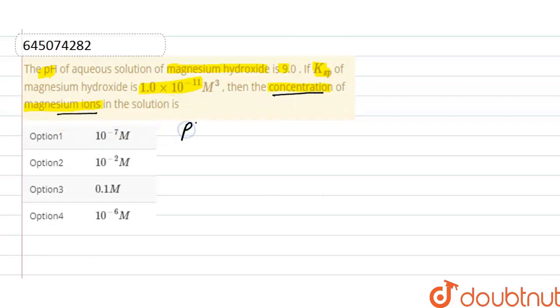First of all, here pH of the magnesium hydroxide solution is given, that is 9. And as we know, pH plus pOH it is equals to 14. So here pOH it is equals to 14 minus 9. So pOH here is 5.